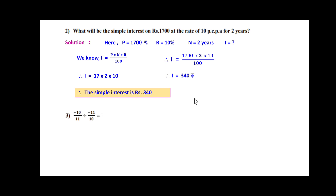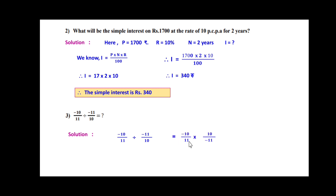Problem number three: (−10/11) ÷ (−11/10) = ? There is a division between two rational numbers. Division turns into multiplication by inverting the second term: numerator and denominator swap. So we get (−10/11) × (10/−11). Multiplying: −10 × 10 = −100 and 11 × −11 = −121. Minus divided by minus gives plus, so the answer is 100/121.